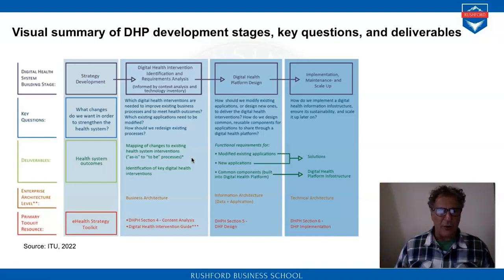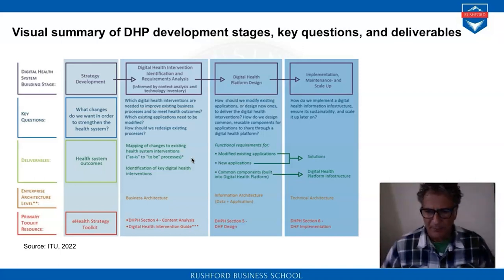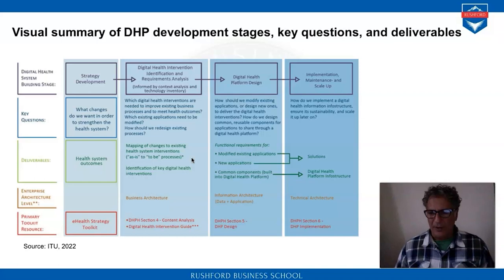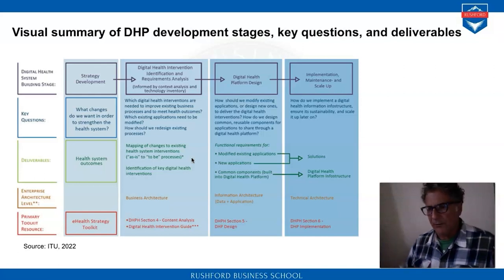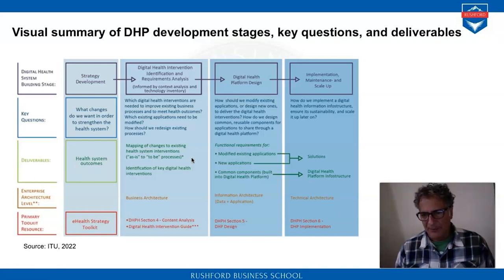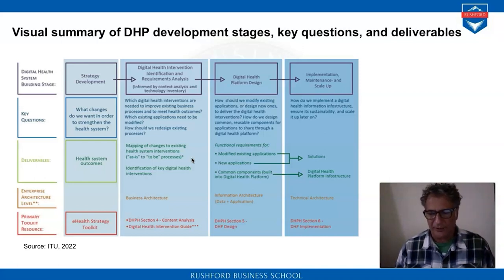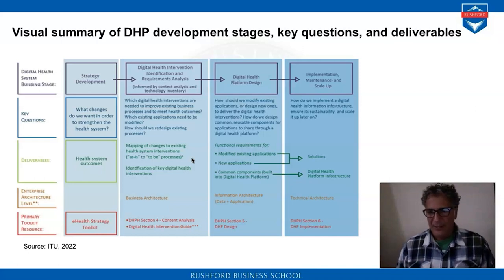For example, one of the main questions could be: what changes do we want in order to improve the health system? What are the main problems — for example, very long waiting lists for specific medical examinations, or difficulties in patient payment and reimbursement? There are several questions we can address before implementing a digital platform.